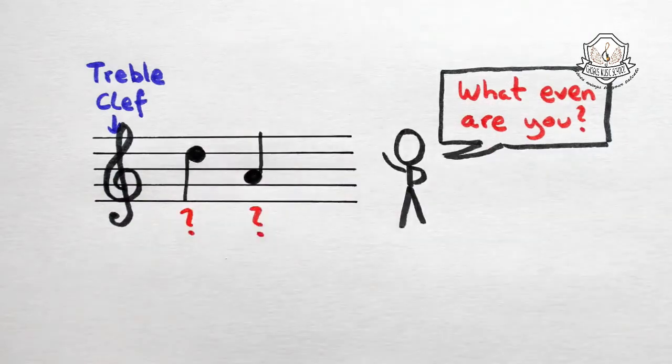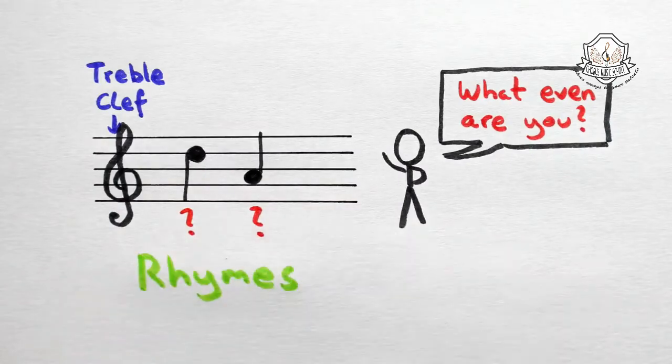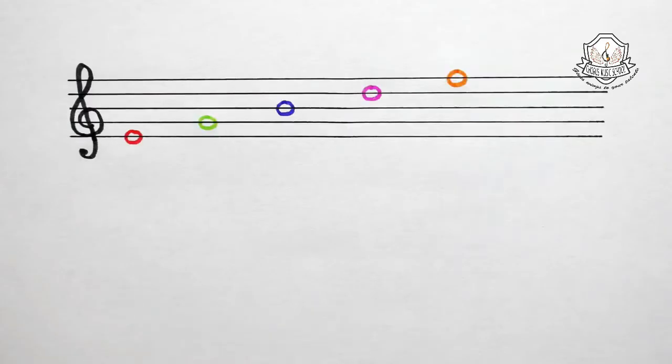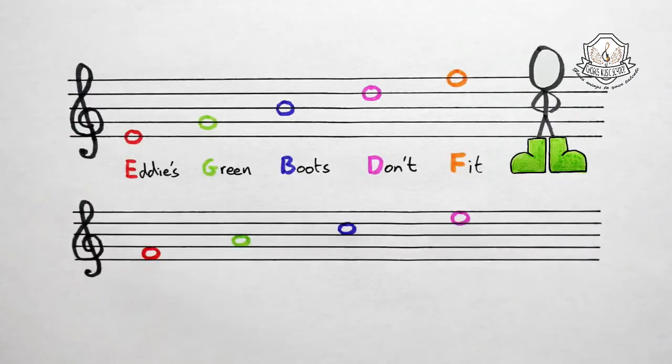The easiest way to figure out how to read the notes on the treble stave is to use two catchy rhymes. For notes that are on the lines, we need to use the rhyme: Eddie's Green Boots Don't Fit. Notes in the spaces are easy - they just spell FACE.